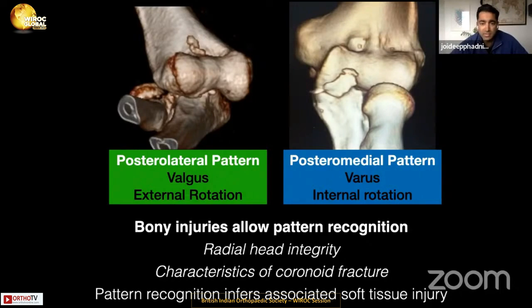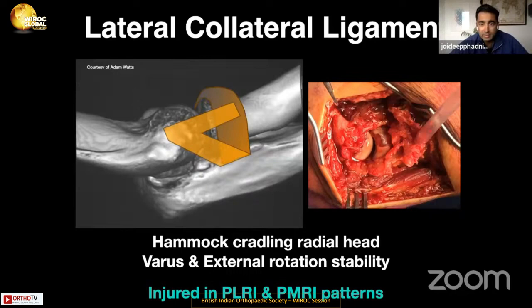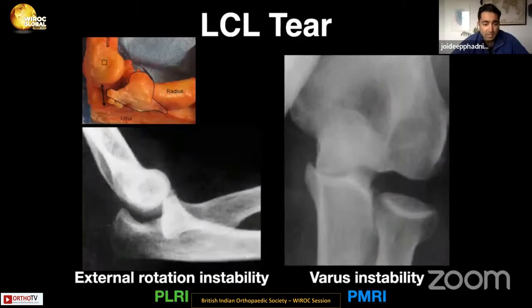Discerning which injury has occurred can be performed by looking at the bony injuries, with particular reference to the pattern of coronoid fracture — its shape and position — and whether the radial head is fractured or intact. Pattern recognition will then infer which associated soft tissue injuries are present and need repair. The lateral collateral ligament always requires repair in these fracture dislocations, as it acts as a hammock to cradle the radial head and provides external rotation stability.